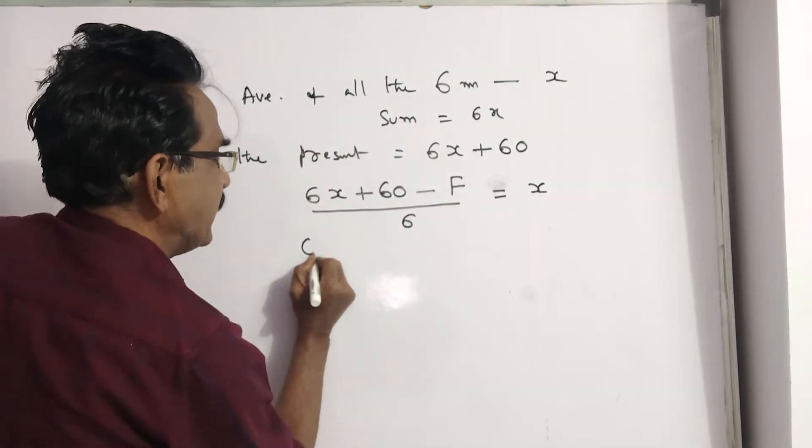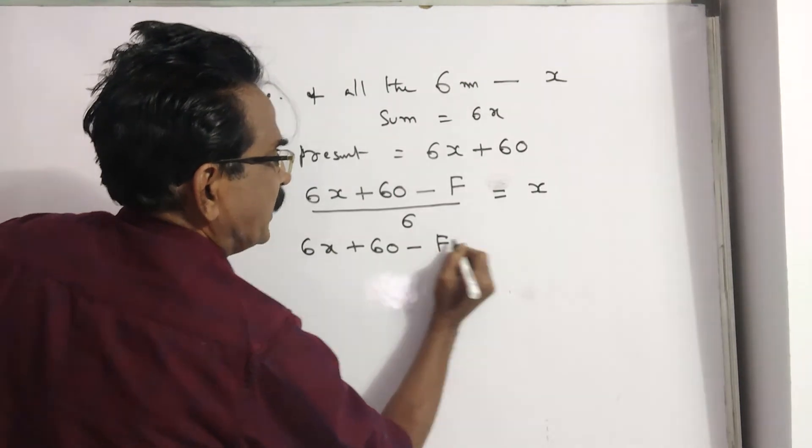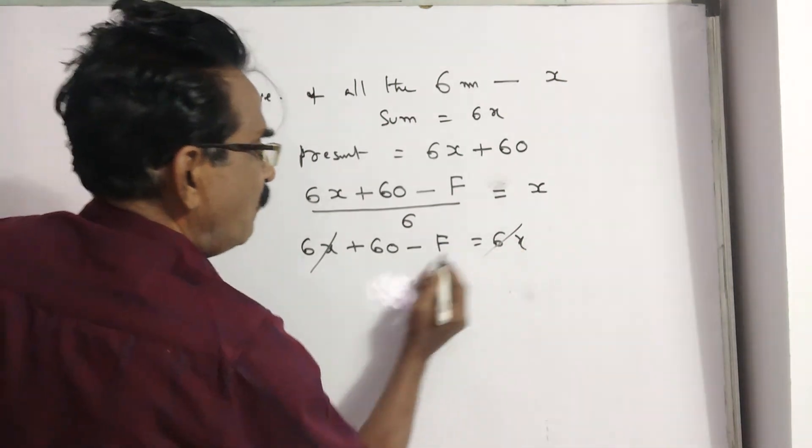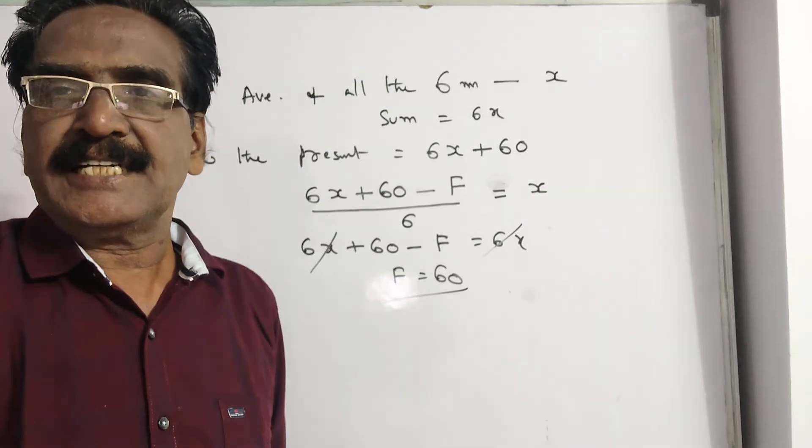So, 6X plus 60 minus father is equal to 6X. 6X gets cancelled. Father is equal to 60 years, friends. Thank you, friends.